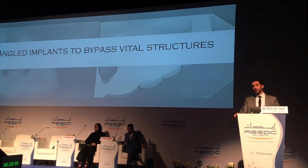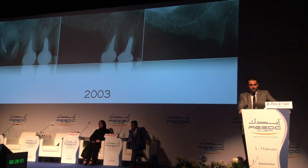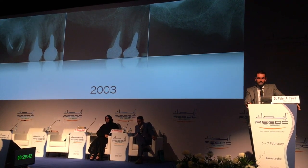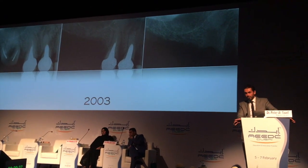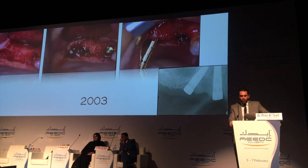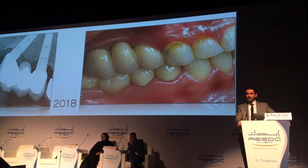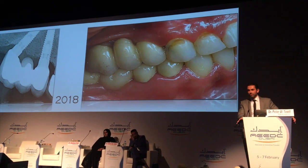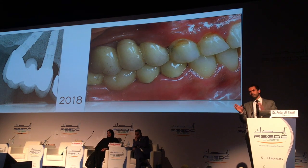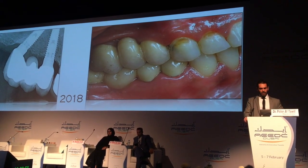Another category is the angled implant to bypass vital structures. Take a look at this case from 2003 — how many of you would do a sinus lift if you see this situation? Many of us would. The patient did not want advanced surgeries — he said, 'Can you do something faster?' Yes, we can. We avoided the sinus by doing angled implants. This is 15 years later, in 2018 — an excellent result, excellent bone stability, even using old external hex implants. With proper planning, when you get to the surgery it's quite easy. Aim to not hit the sinus — angling the implant is a good option.